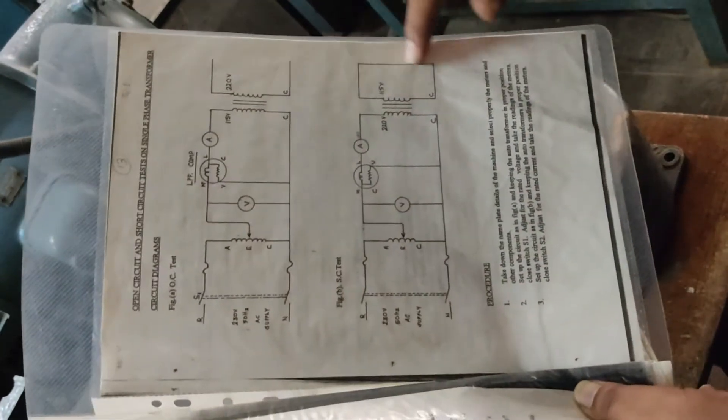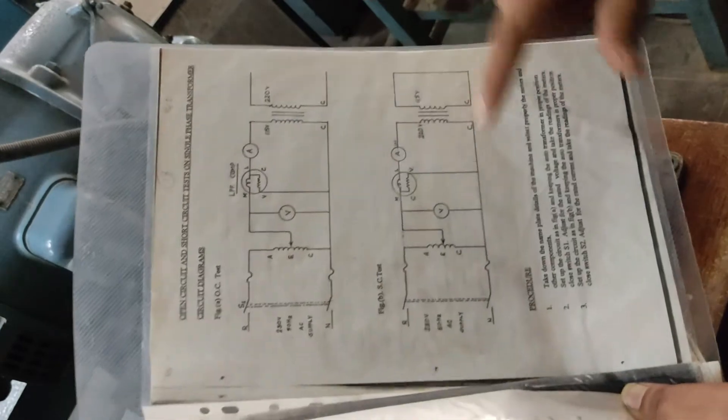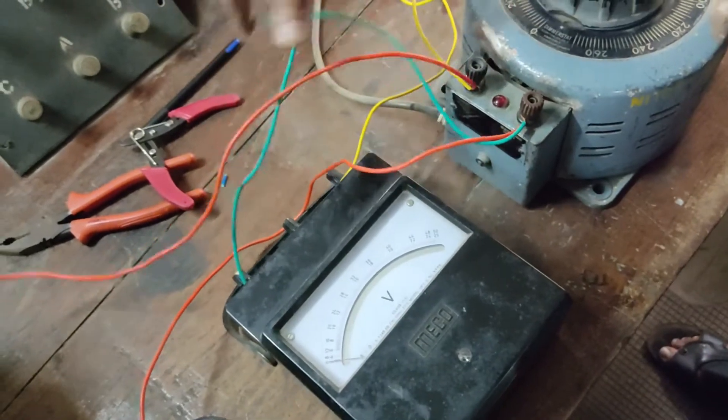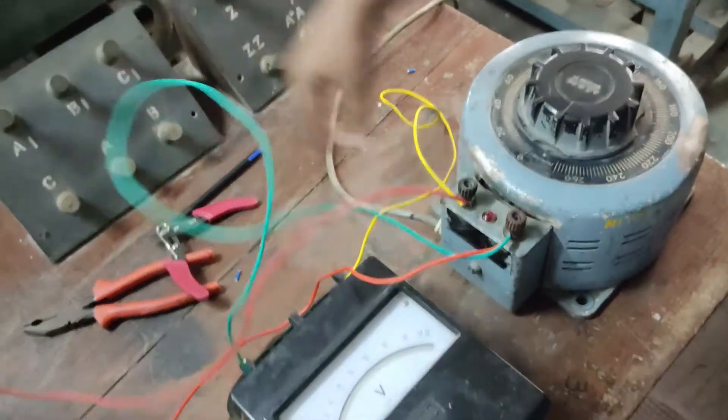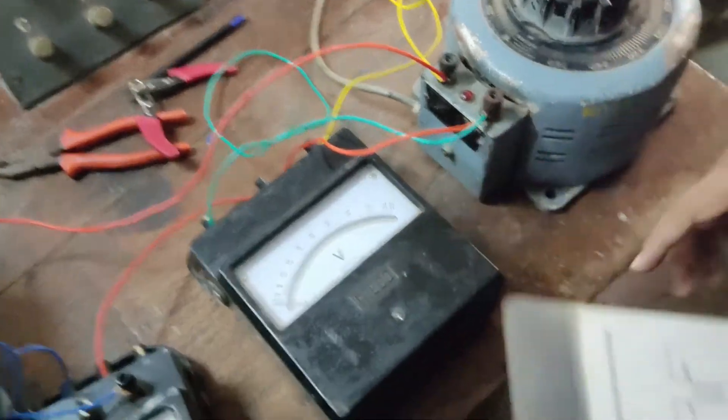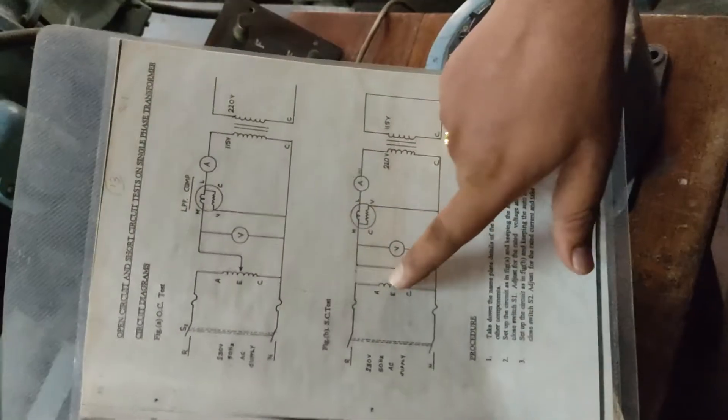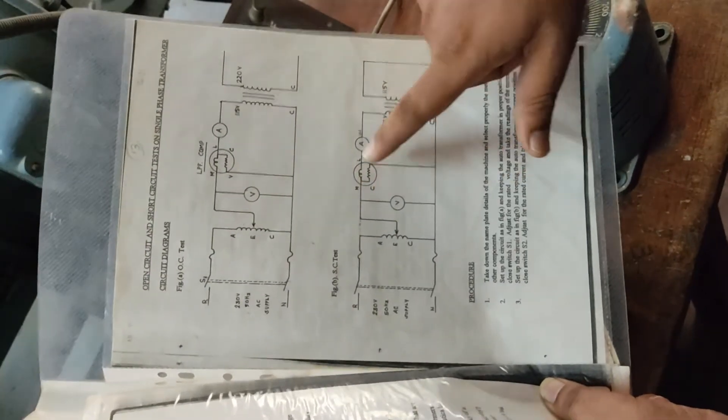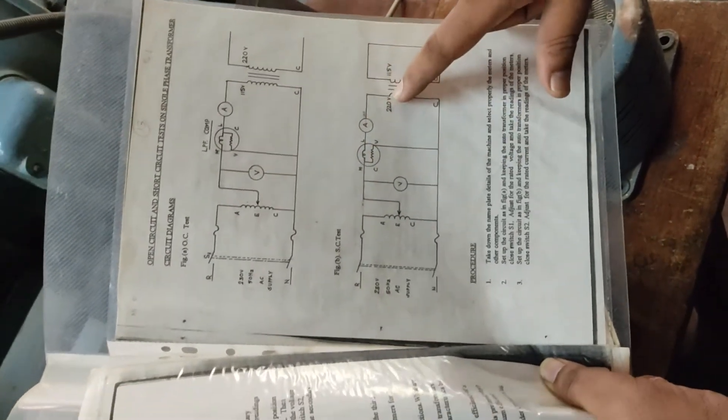Coming to the connections now, the voltmeter is connected across the supply. This is the voltmeter - two wires, phase and neutral connector. This is the voltage. Next, the line has to be connected to the M and MC short. The line is connected to the first terminal of the transformer 220 voltage through an ammeter.